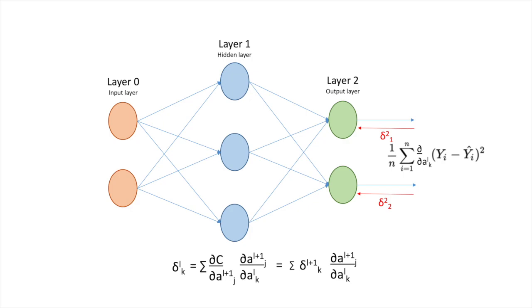Delta_k^l can be written as summation of dC/da_j^(l+1) times da_j^(l+1)/da_k^l, which is equal to delta_k^(l+1) times da_j^(l+1)/da_k^l.